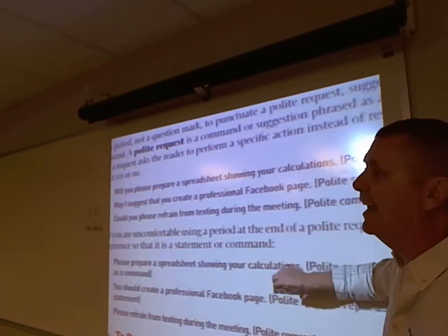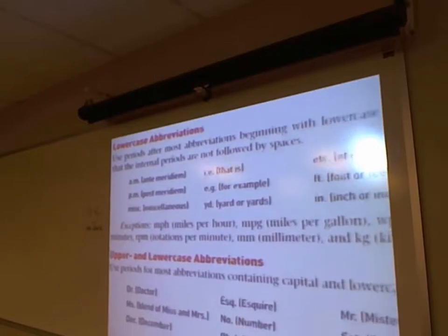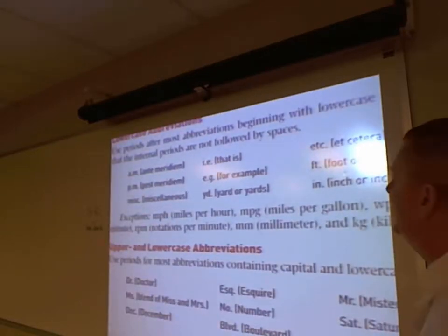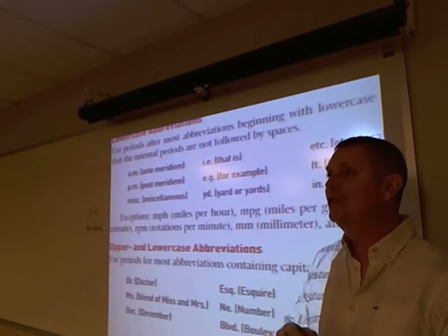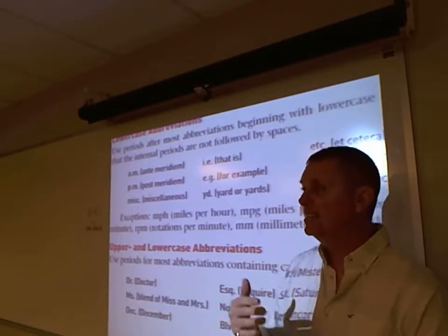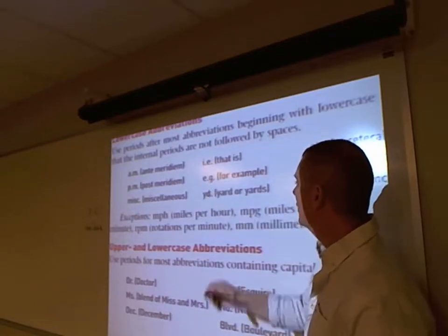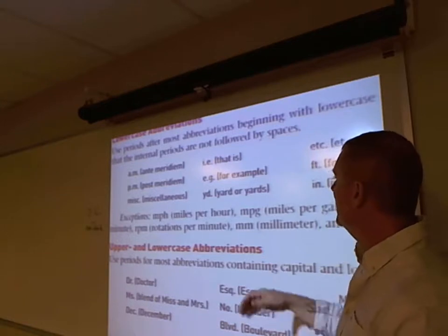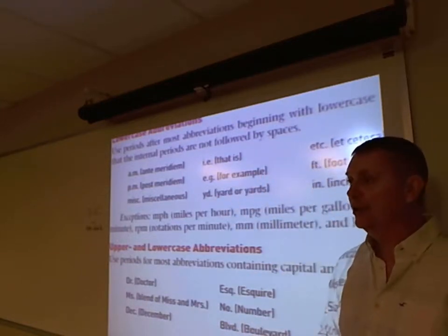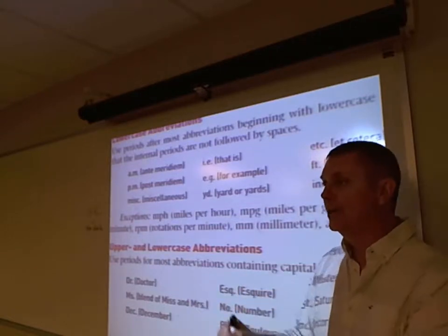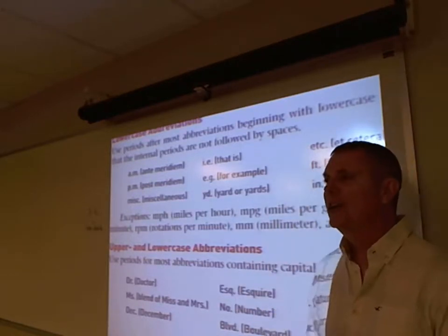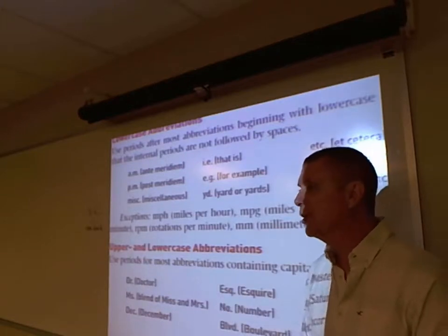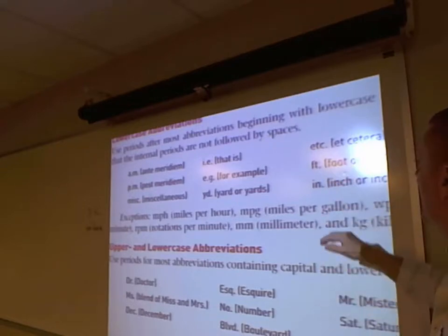To punctuate abbreviations and initials: lowercase abbreviations like a.m./p.m., miscellaneous (i.e.), for example (e.g.) — E period, G period, space once after. Yard, et cetera — though you really shouldn't use 'et cetera' in business writing; say 'and so forth' or list everything. Foot and inch all end with periods. Exceptions include miles per hour, miles per gallon, rotations per minute, and metric measurements — those don't use periods.